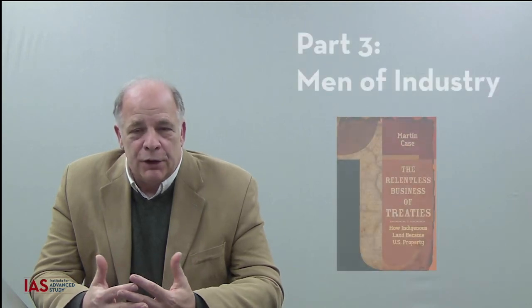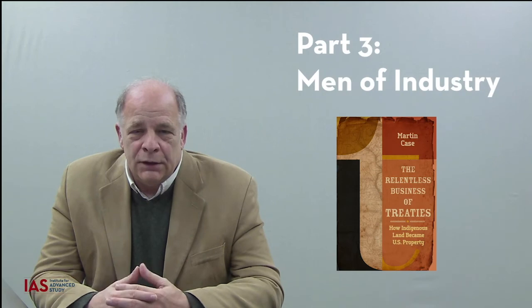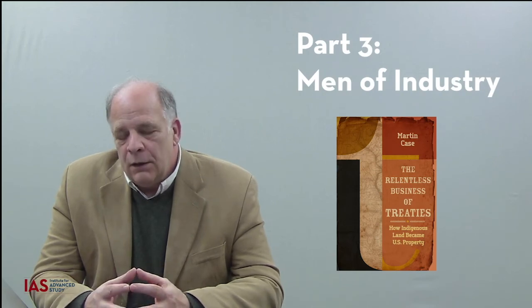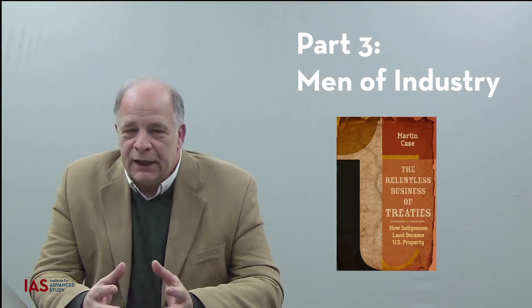The fur trade supported land speculation. It also was a part of turning the natural world into commodities. Part three of the book talks about extraction and the role it played in turning the natural world into commodities in the U.S. property system.